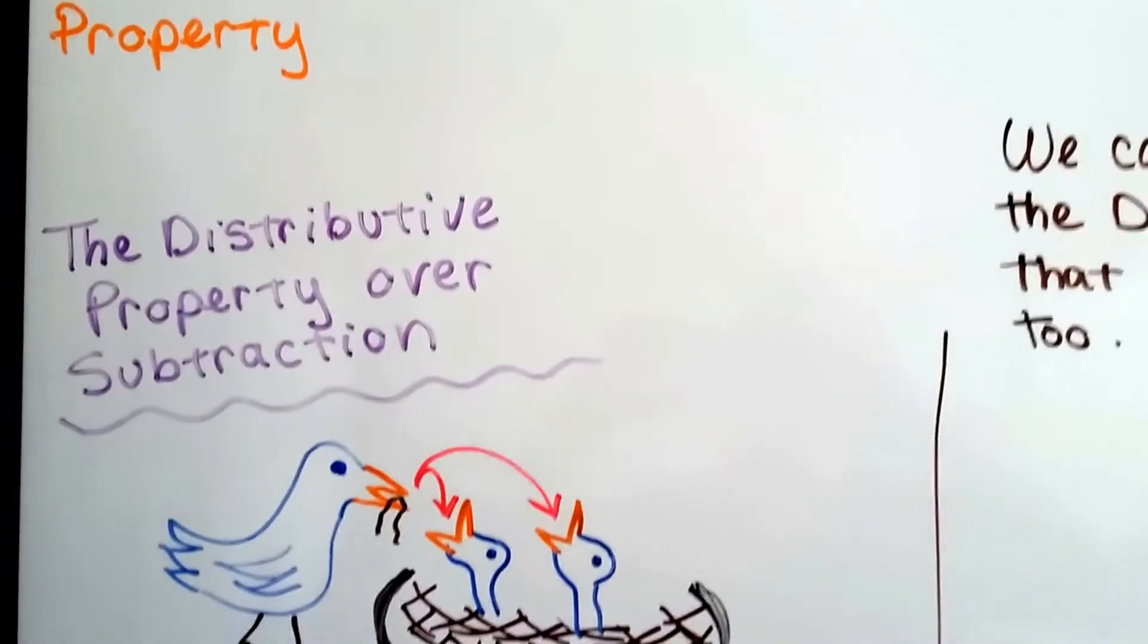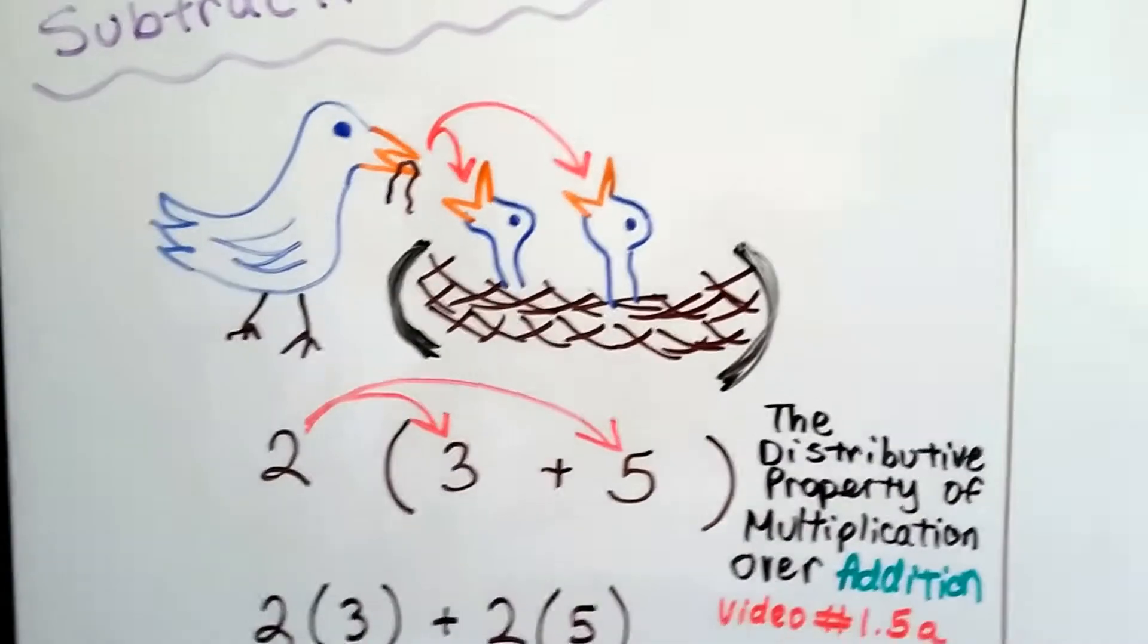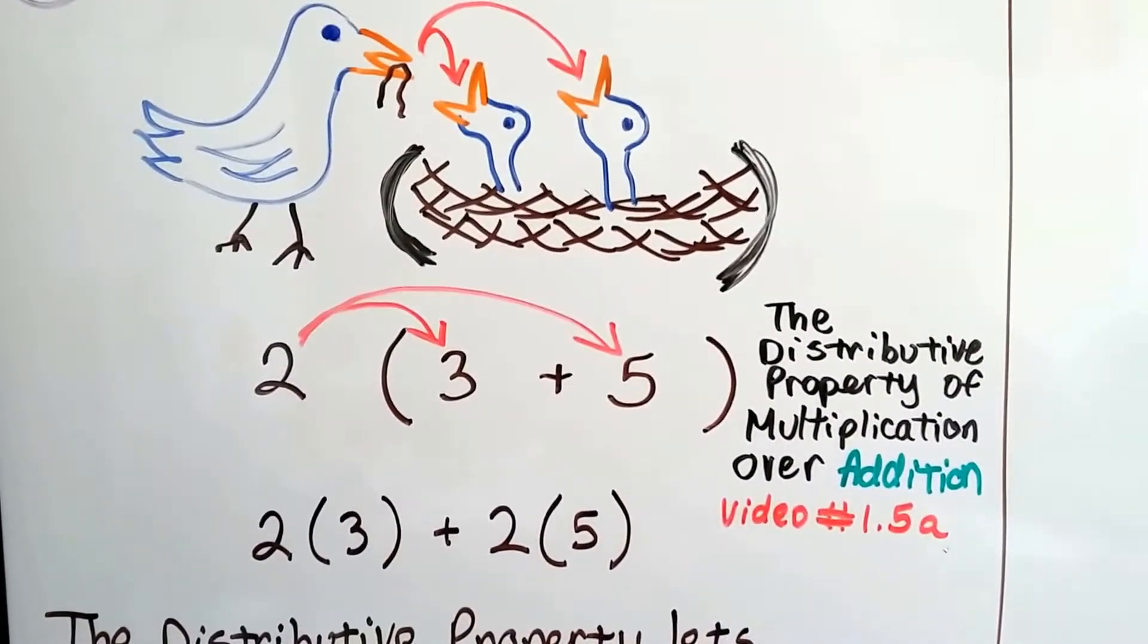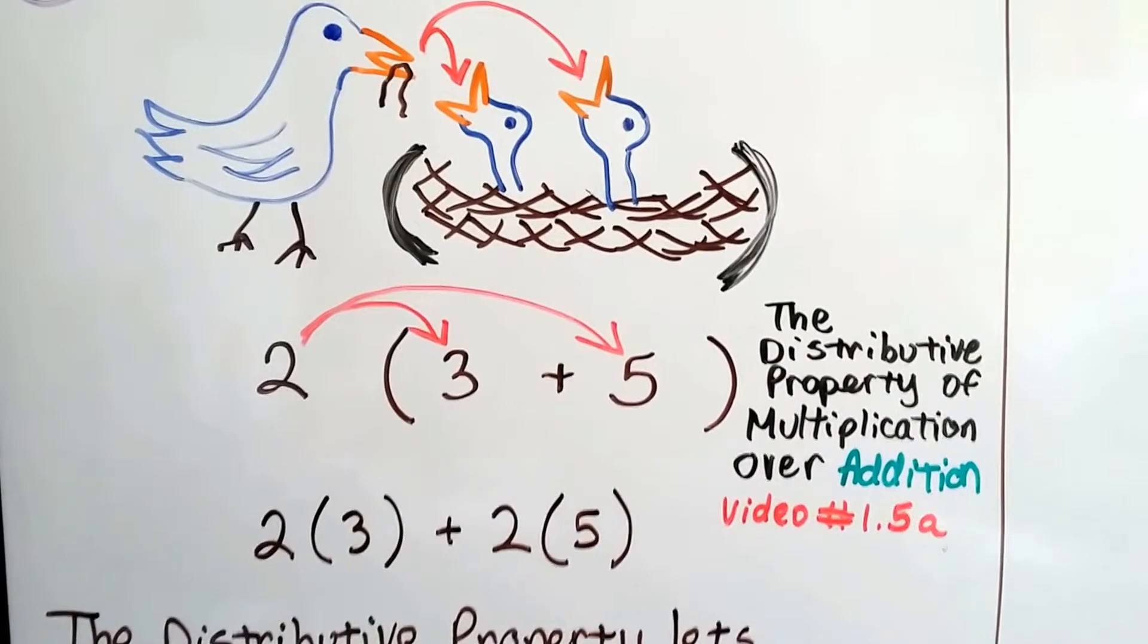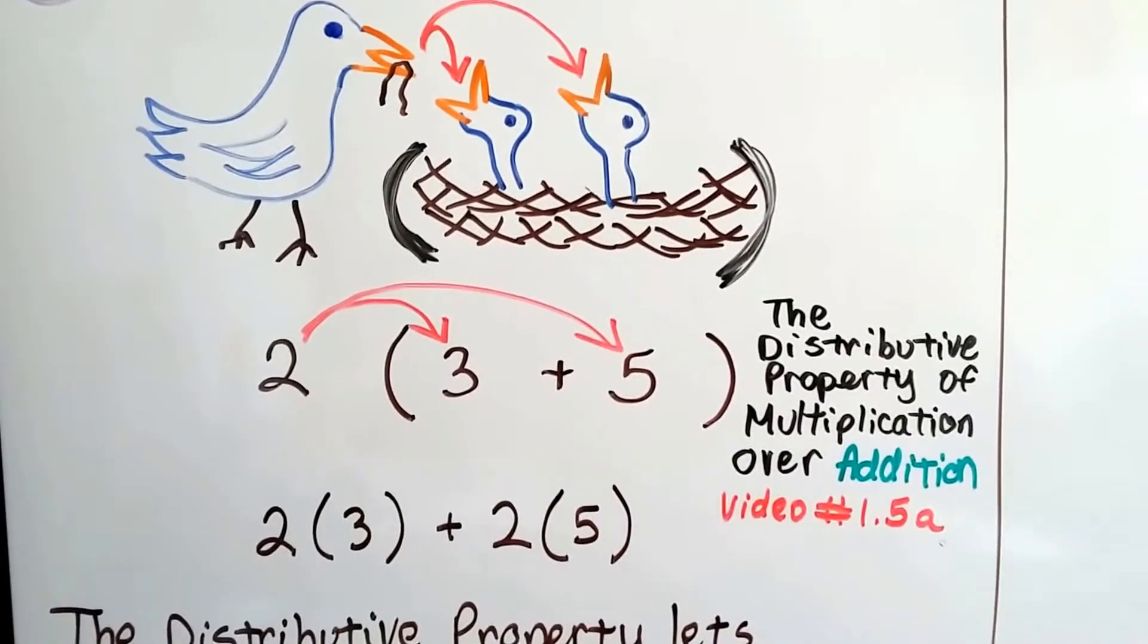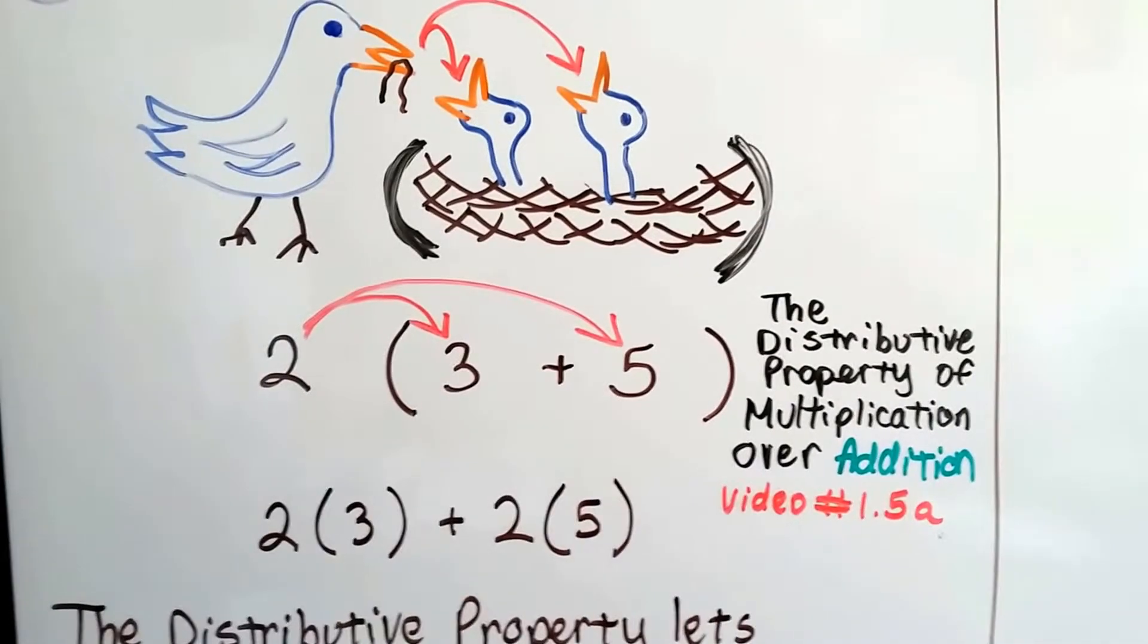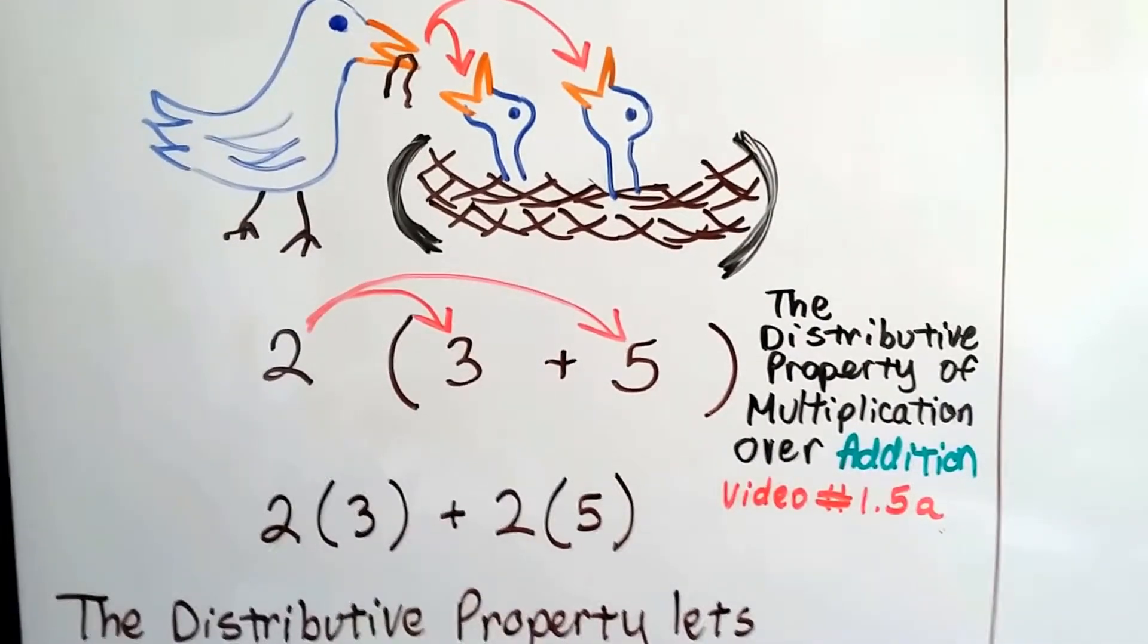And now we're going to talk about the distributive property over subtraction. Now if you're a regular subscriber of mine, you've probably seen my Mother Bird and the baby nestlings in the parentheses nest. This is the distributive property of multiplication over addition. If you haven't seen it, there's a link in this description of this video that can take you there.